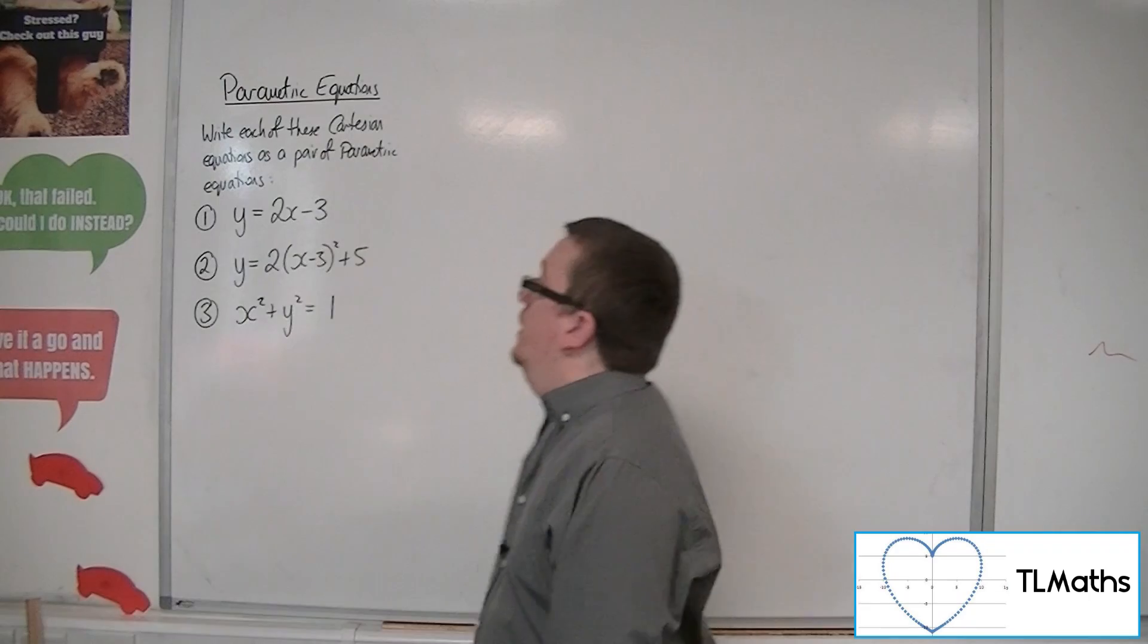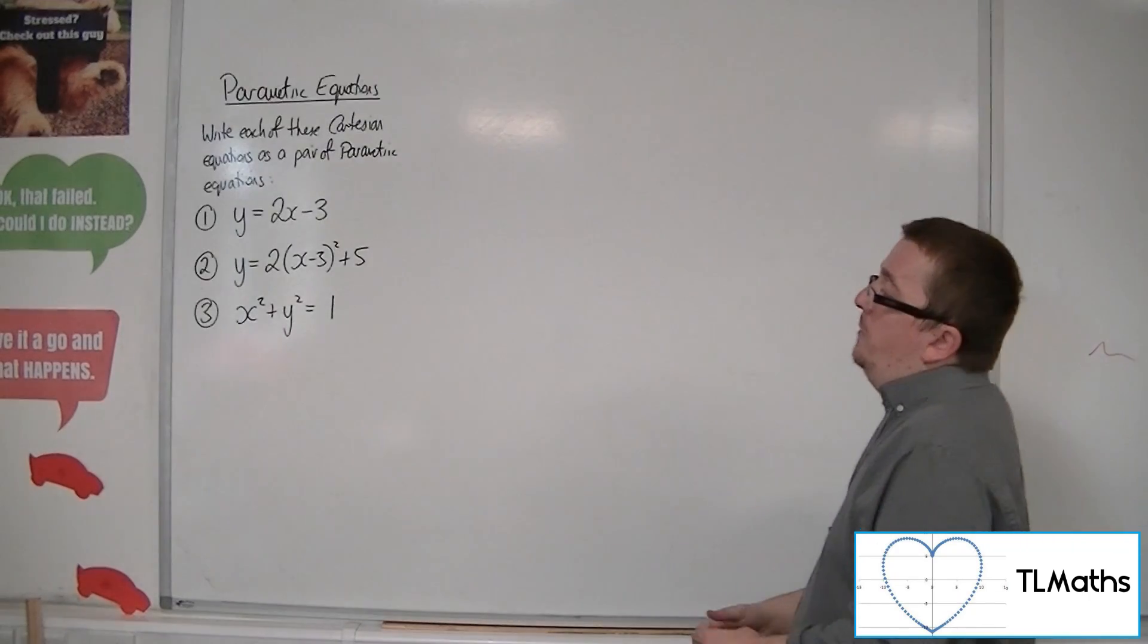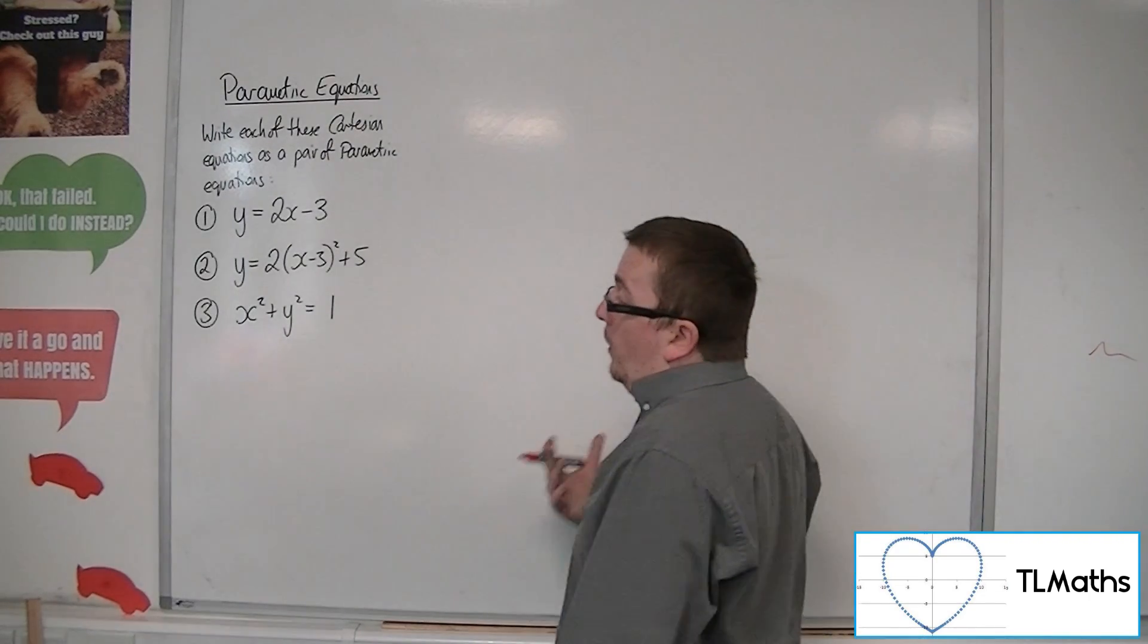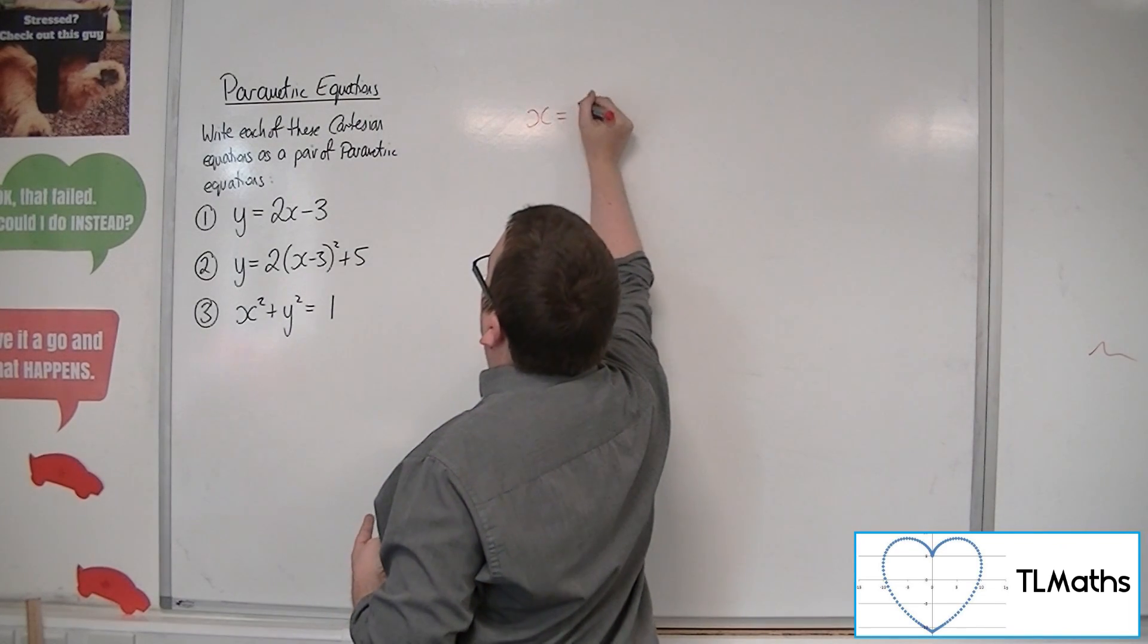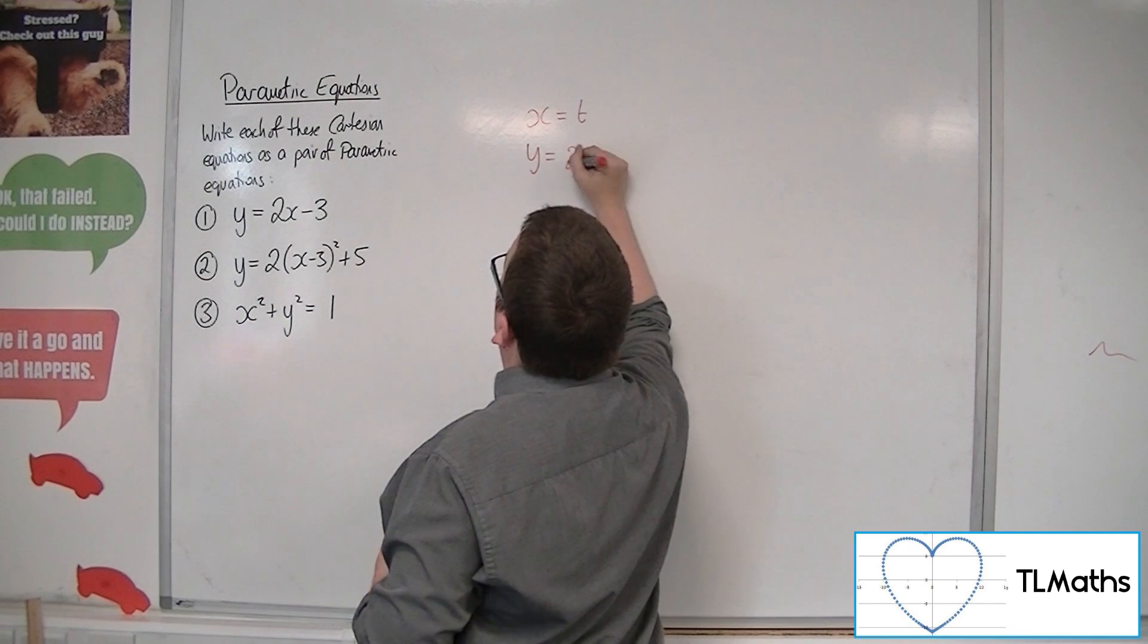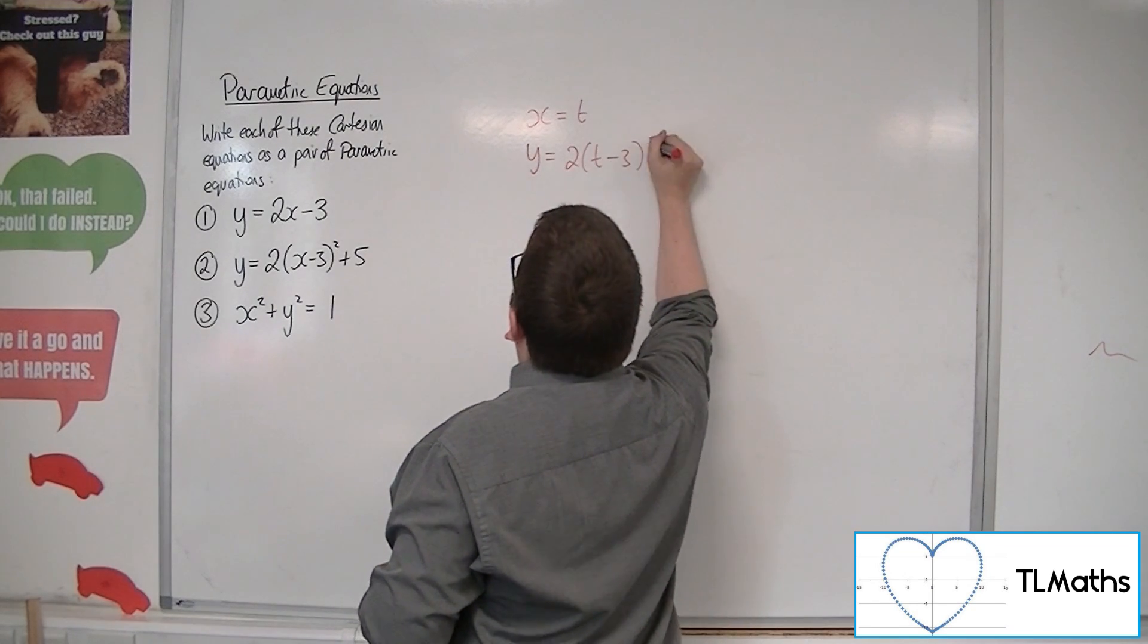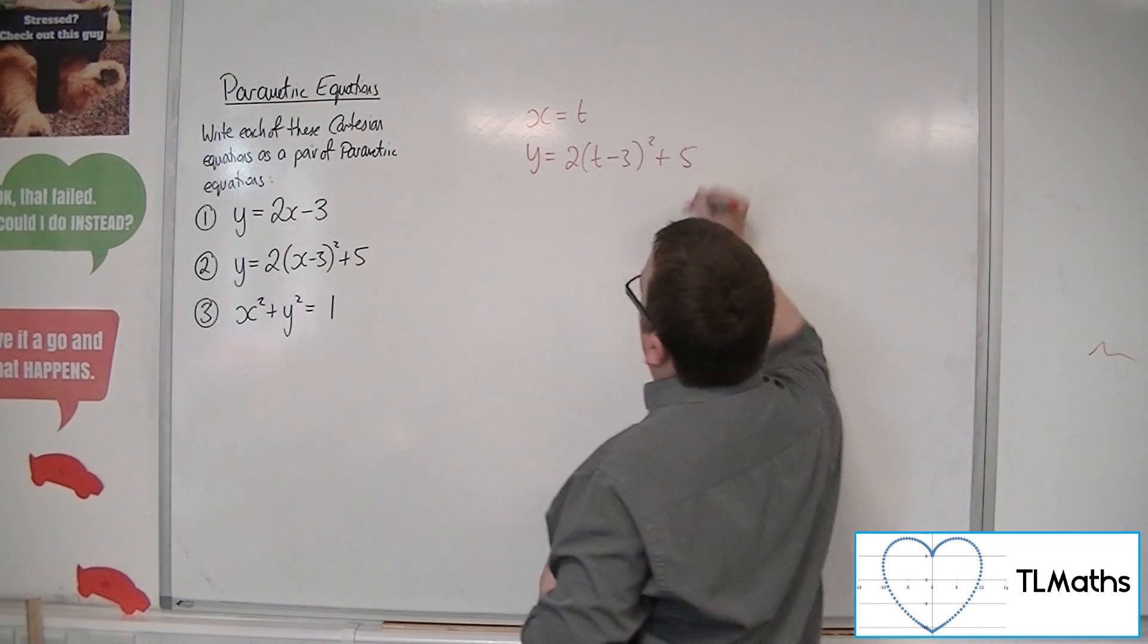Number two, we've got this y equals 2 lots of x minus 3 squared plus 5. And once again, because you've got y as a function of x only, then you could say, well, x is t and y equals 2 lots of t minus 3 squared plus 5.